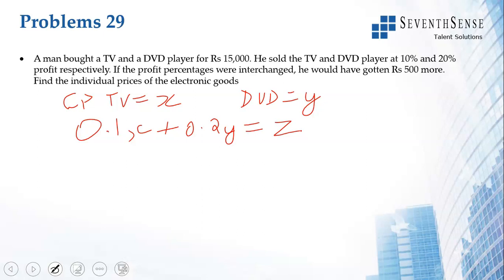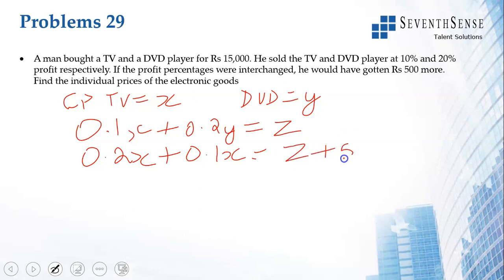If the profit percentages were interchanged — TV at 20 percent and DVD at 10 percent — the profit would have been 500 rupees more. So: 0.2x + 0.1y = z + 500. We now have two profit equations. Subtracting the first from the second, we get 0.1x − 0.1y = 500.